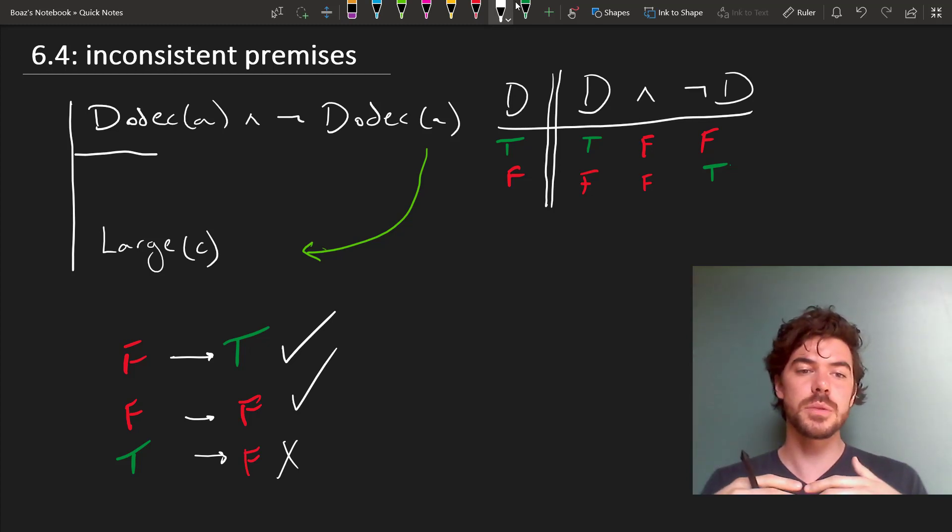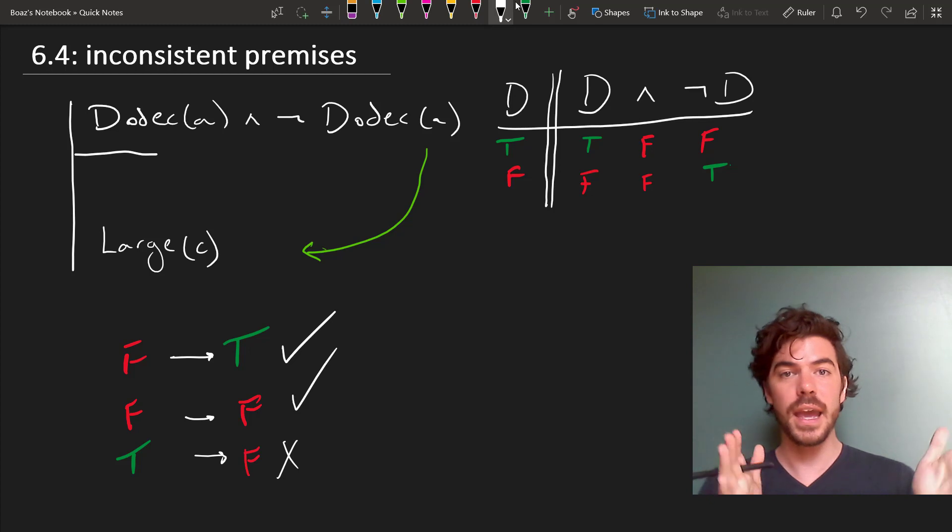But the way to think about this is just to bear in mind that as long as we're not going from T to F, the argument is valid. And since it's guaranteed to be F, then we're A-okay. And that's what happens with arguments with inconsistent premises.